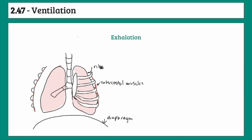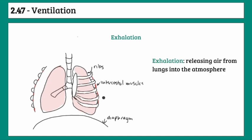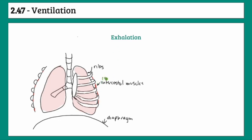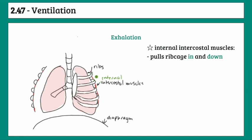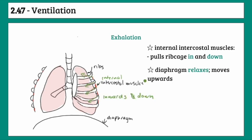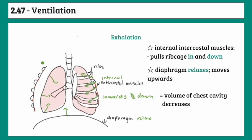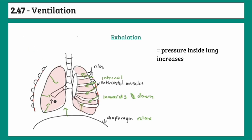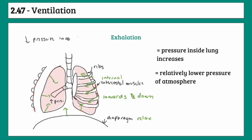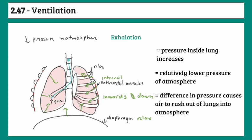For exhalation — releasing air from the lungs into the atmosphere — essentially the opposite happens. The internal intercostal muscles pull the ribcage inwards and down, and the diaphragm relaxes and moves upwards. This causes the space of the chest cavity to decrease, the volume decreases, and pressure increases. There's a relatively lower pressure in the atmosphere, and as a result, air from inside the lungs rushes outwards.